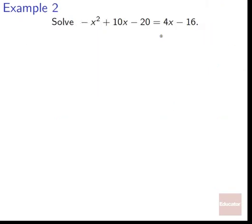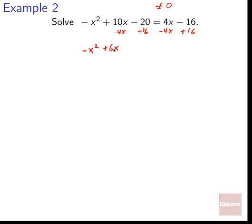Second example: solve −x² + 10x − 20 = 4x − 16. We have that quadratic formula, let's take it for a spin. First, it's not currently equal to zero, so we need to rearrange. Subtract 4x and add 16: −x² + 6x − 4 = 0. Now we're set up.